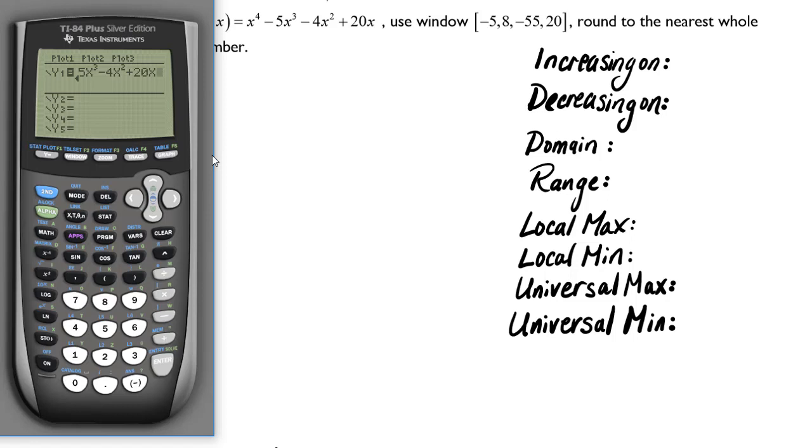So there's your graph or your function that you're going to graph. Now we need to change the window. The window button is up here right next to the y equals button. When you click that, you can see how there's an x min and an x max, and then a scale, and then a y min, y max, and a scale. Let's leave the scale at 1 for now, but let's start with the negative 5 to 8.